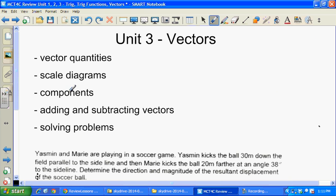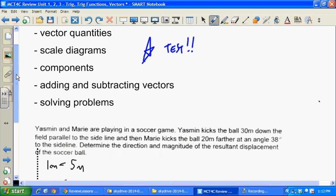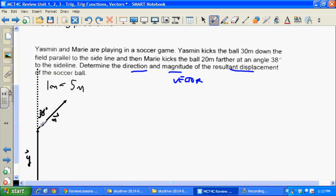The third unit was brand new stuff on vectors. Almost all this stuff was brand new. Vector quantities and scale diagrams and components and adding, subtracting vectors and solving. All this was new. Very important to do this test again. All this stuff was new. And some of you did poorly on this test. Maybe the worst test of the year. Do that test again. Here's a typical example. Yasmin and Marie are playing in a soccer game. Yasmin kicks the ball 30 meters down the field parallel to the sideline. And then Marie kicks the ball 20 meters farther at an angle of 38 degrees to the sideline. Determine the direction and magnitude of the resultant displacement. Whenever you hear that, you know you're talking vectors. And remember, the whole idea of vectors is this directed line segment business. This question never asked you to do it, but I drew a scale diagram.